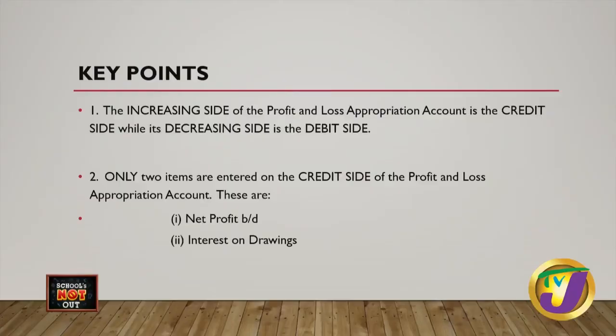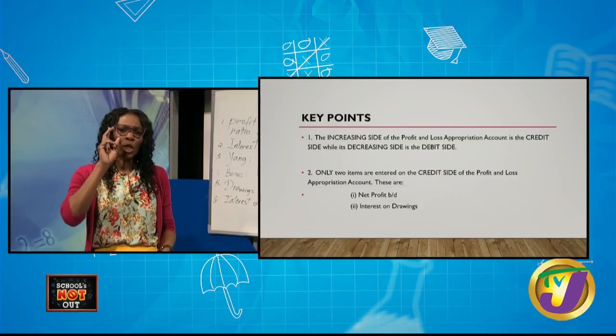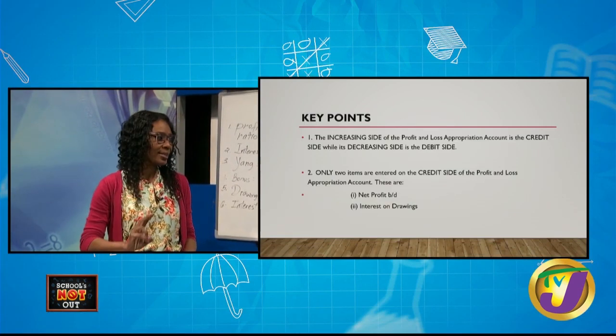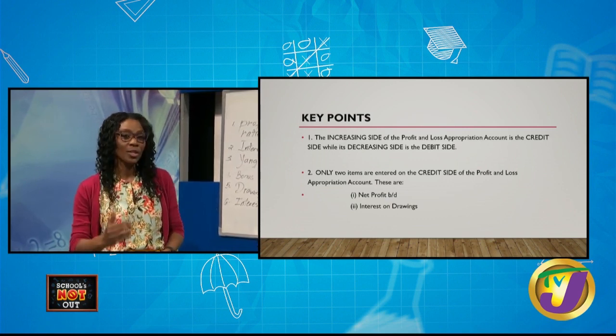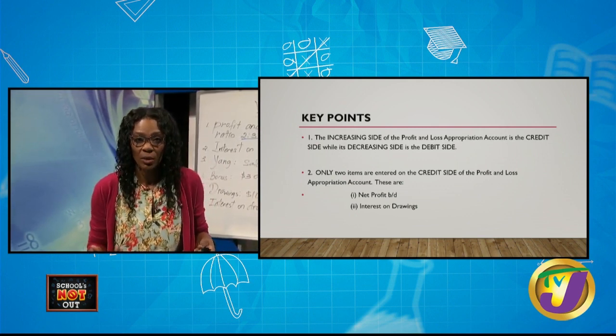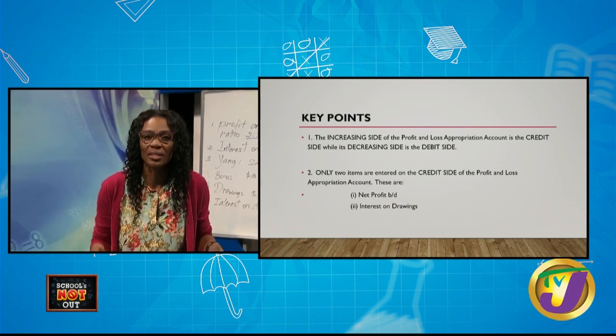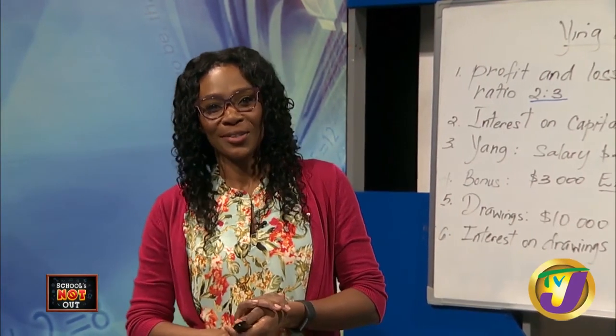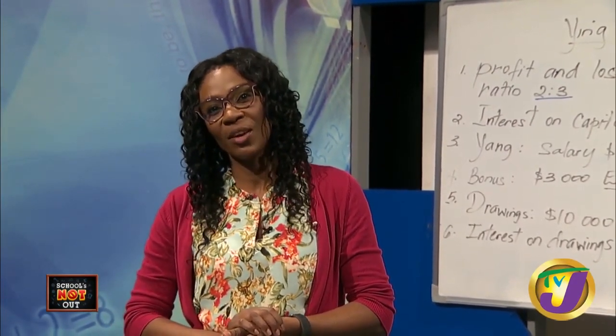Key points for today: the increasing side of the profit and loss appropriation account for partners is the credit side, while the decreasing side is the debit side. Only two items are entered on the credit side of the partners' profit and loss appropriation account. Also remember: if there is no profit and loss sharing ratio agreed on, share the profit and losses equally. That's all for today on CSEC Accounts — partnership profit and loss appropriation accounts.